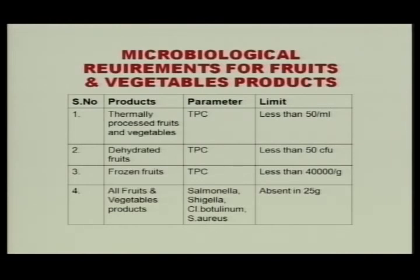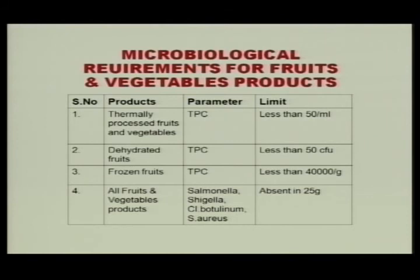Coming to microbial requirements for some products — fruits and vegetable products. For thermally processed fruits and vegetable products, total plate count should be less than 50 per mL. Dehydrated fruits total plate count should be less than 50 per gram. Frozen fruits total plate count should be less than 40,000 per gram. For all fruits and vegetable products covered under FSSR regulation 2.3, Salmonella, Shigella, Clostridium botulinum, or Staphylococcus aureus — all pathogens — should be absent in 25 grams of product.